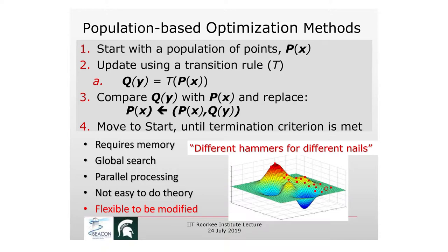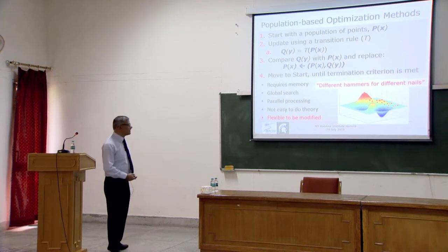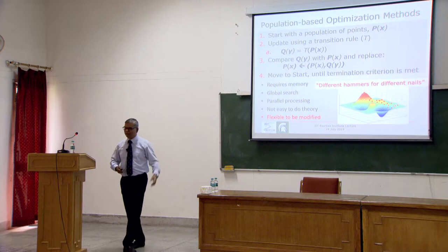Population-based approaches start with a set of points (a population), apply a transition rule to produce a new population, combine old and new, keep the best members, and continue until termination. These require more memory to store two populations, but they enable global search, support parallel processing (you can evaluate all members simultaneously), and are very easy to modify — making them highly customizable. There are pluses and minuses to both approaches; in most of our applications, we try to combine the two methods.